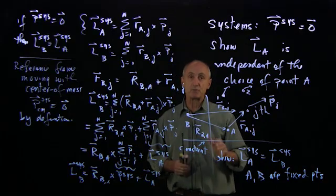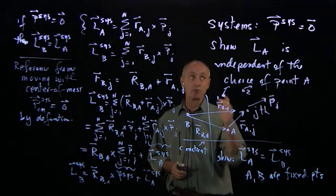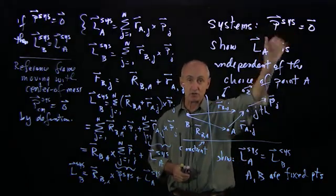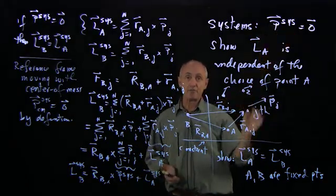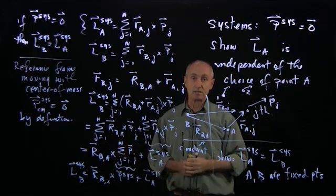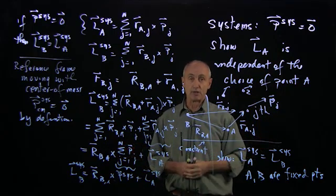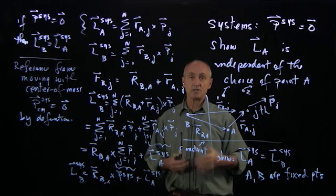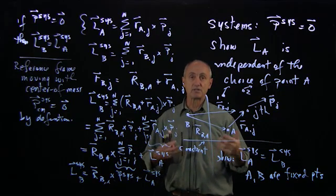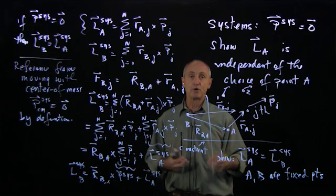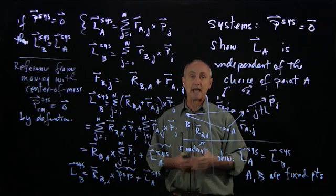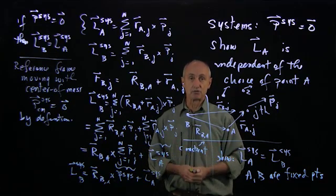This is one more reason why the center of mass reference frame is an important reference frame. In the center of mass frame, the total momentum by definition is 0, and therefore the angular momentum is independent of any point chosen in that frame. So when we talk about a system's angular momentum, we're referring to the angular momentum in the center of mass reference frame.